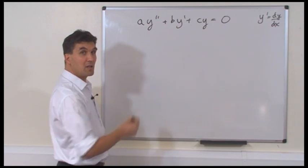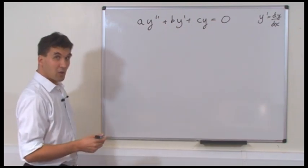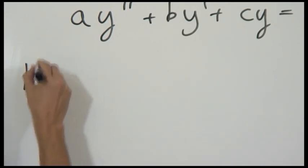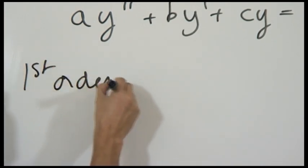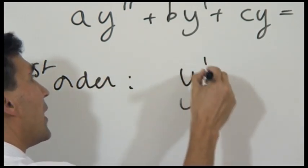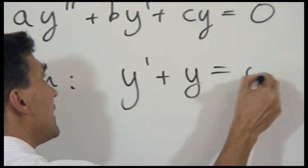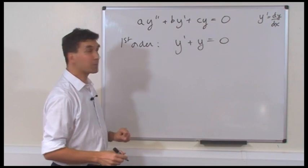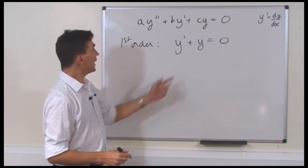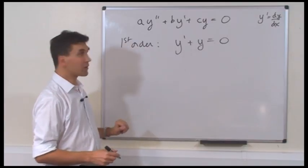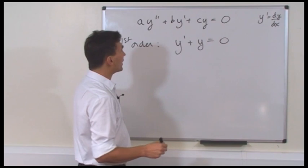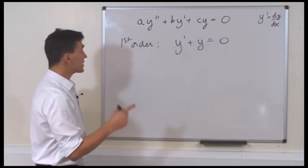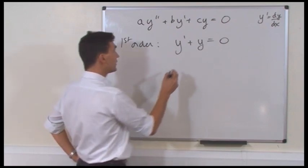So let's take a first-order, linear, homogeneous differential equation. For example, something like Y prime plus Y equals 0. That is a first-order equation because it's Y prime — no Y double primes in there — and it's still linear because there's no products of Y with itself or Y times Y prime, and it's still homogeneous because of that 0 on the right-hand side. And that's an equation we know how to solve.